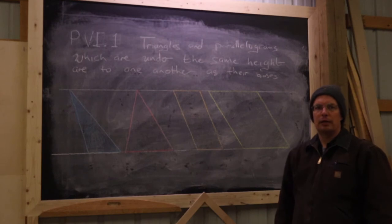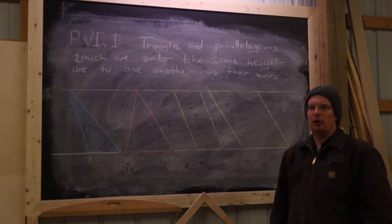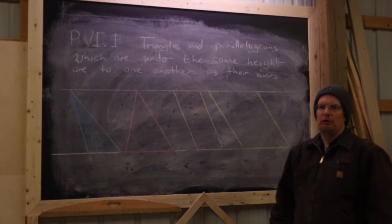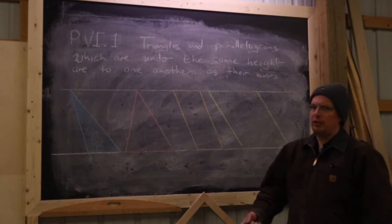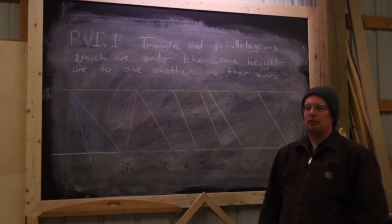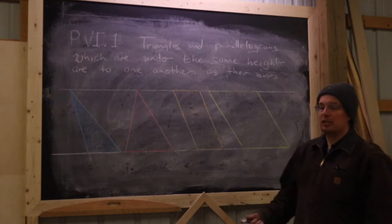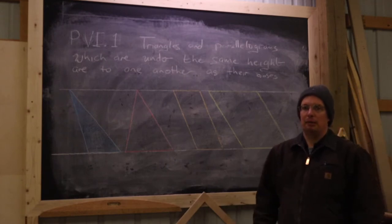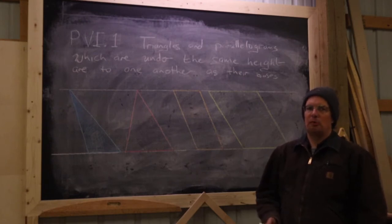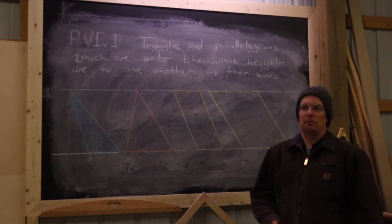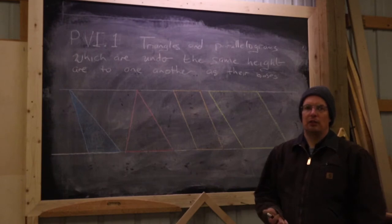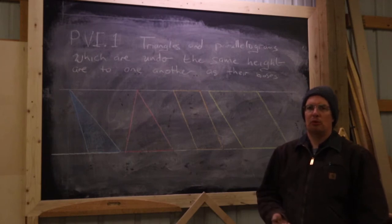Welcome back to our next video in unit two on ratio, proportion, and similarity. In this video, we're going to establish several of Euclid's propositions, for the most part without proof, from Book Six on similarity and how similarity relates to ratio and proportion. In particular, the most useful propositions we're going to develop are the ones that allow us to construct a figure that has magnitudes in it that must be in proportion with one another.